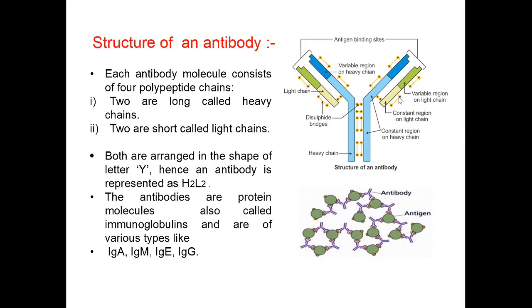Let us understand the diagram of an antibody. These are the heavy chains, and these are the light chains. Both have constant and variable regions. These two chains are joined by disulfide bridges. This is the antigen binding site. The antibodies join to the antigens — this is how they join antigens and block them.